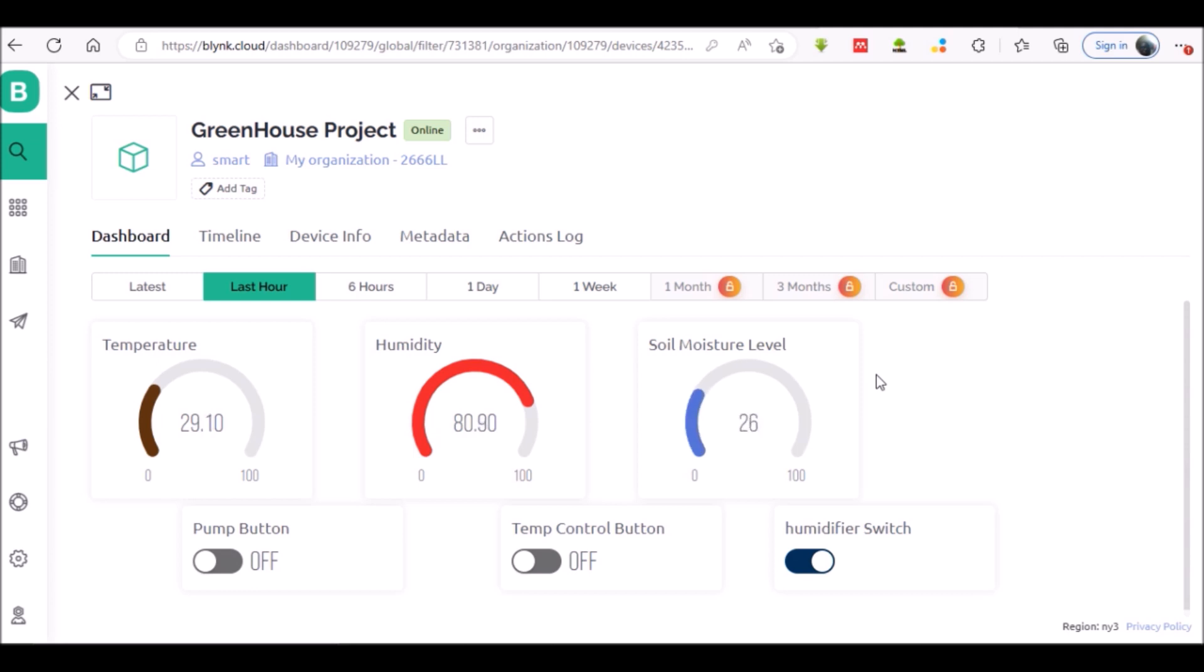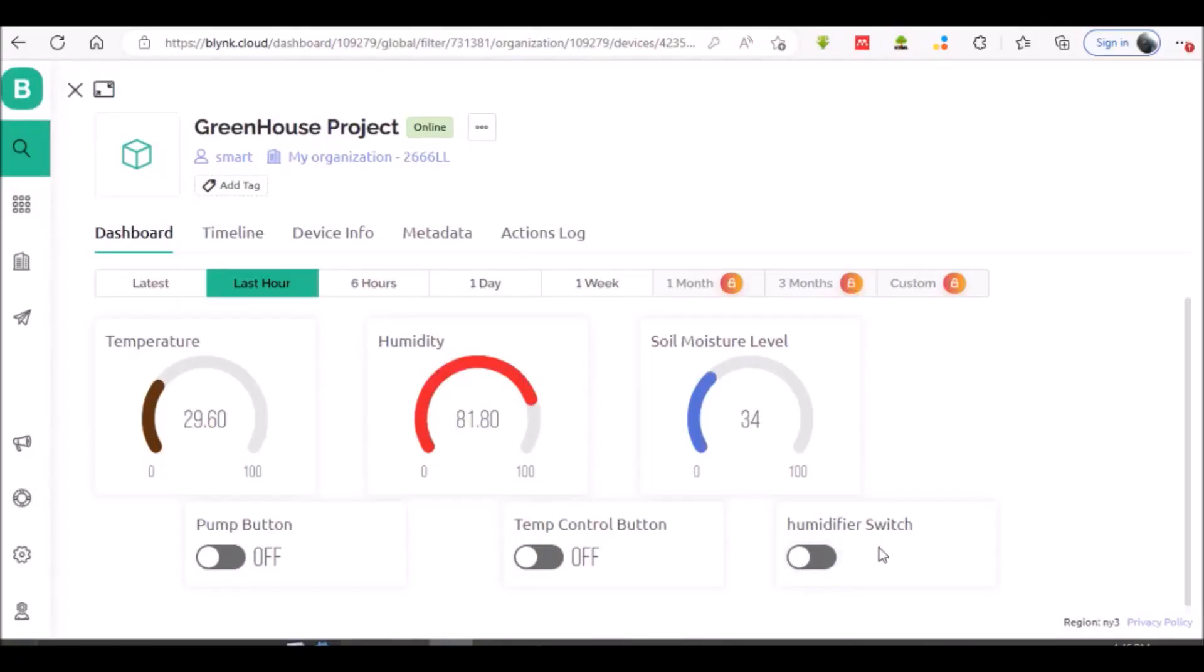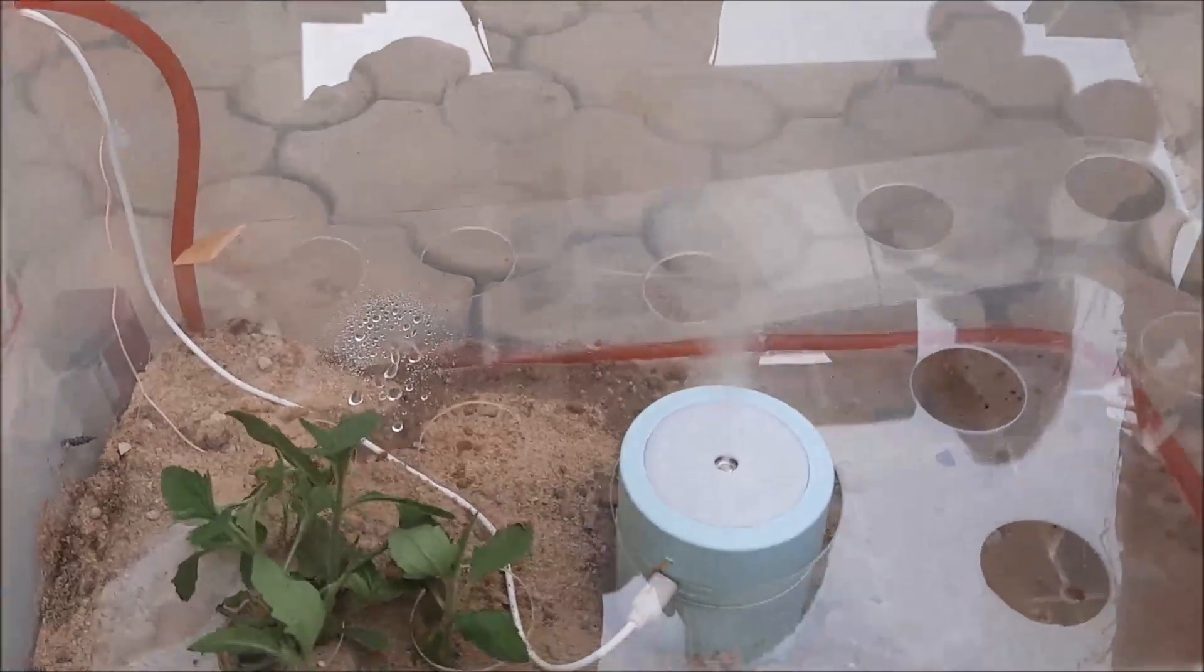Now let's remotely control the greenhouse via the Blynk IoT dashboard. When we toggle the switch button for the humidifier, we can see that it will make the humidifier be turned on at the physical end of the greenhouse model.